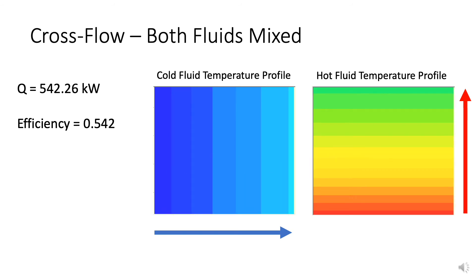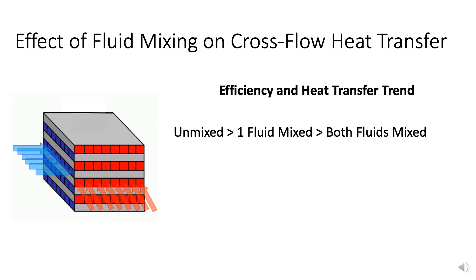Finally, there's the system where both fluids are allowed to mix. Both temperature gradients are reduced to a single dimension of travel — the cold fluid temperature profile only exists in the horizontal direction, while the hot fluid temperature profile only relies on the vertical direction. The heat transfer is reduced even further to 542.26 kilowatts, while the efficiency drops again to 0.542. Overall, the unmixed fluid cross-flow heat exchanger is the most efficient option, allowing for the greatest heat transfer. Allowing for mixing in either of the fluids decreases the heat transfer between the two fluids, as each fluid experiences greater heat transfer amongst itself in competition with the hot-cold heat transfer. In the unmixed system, more of the heat from the hot fluid is being transferred to the cold fluid, instead of being used to reheat hot fluid that has already been cooled.